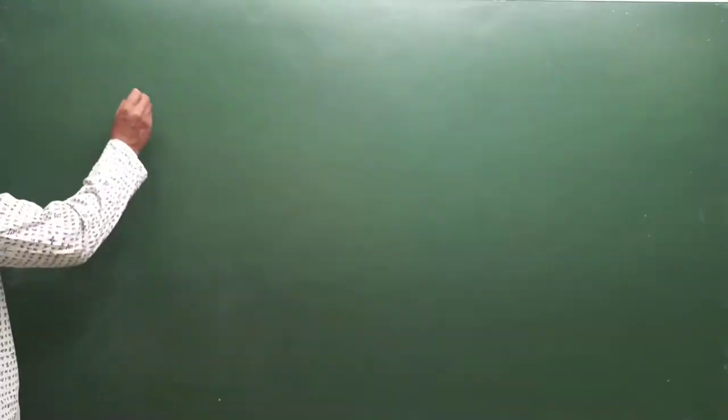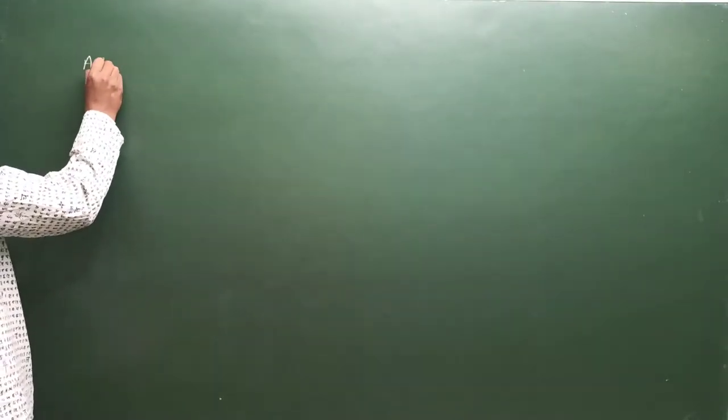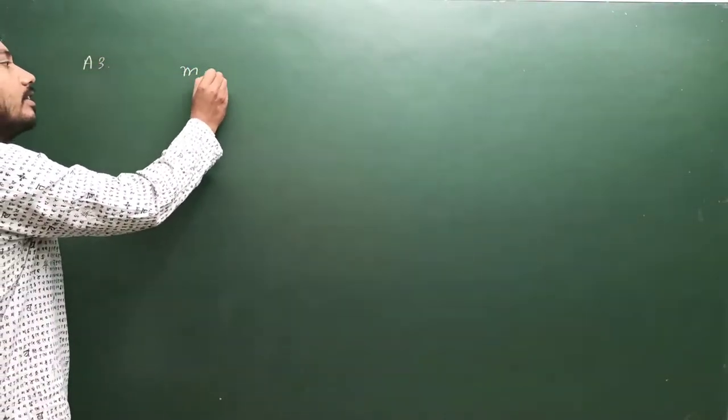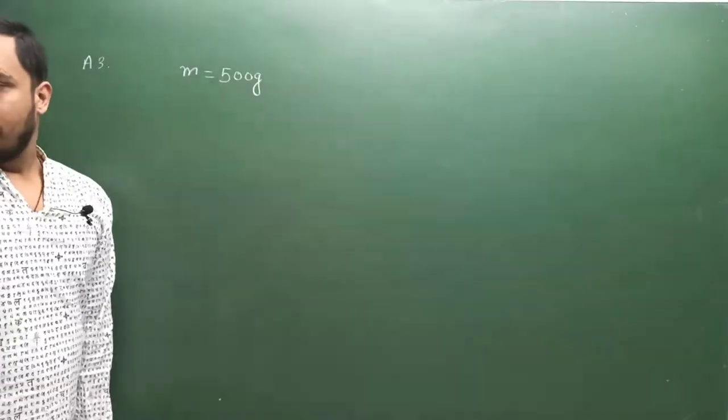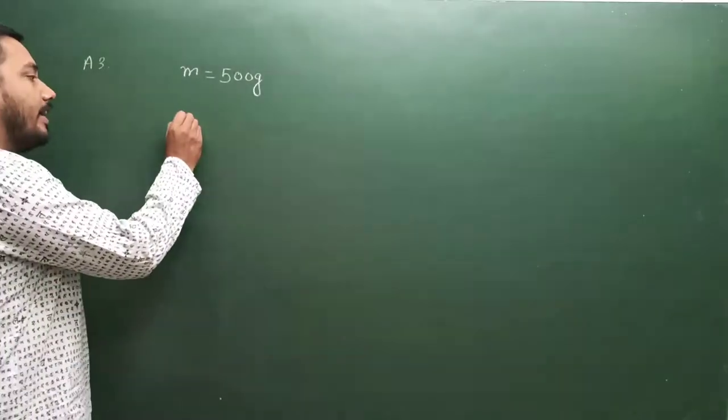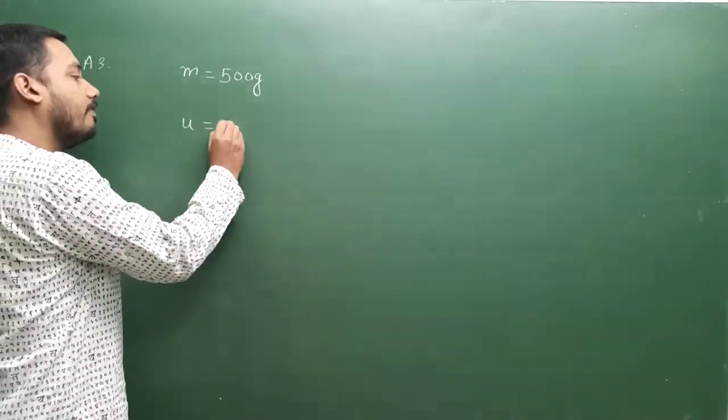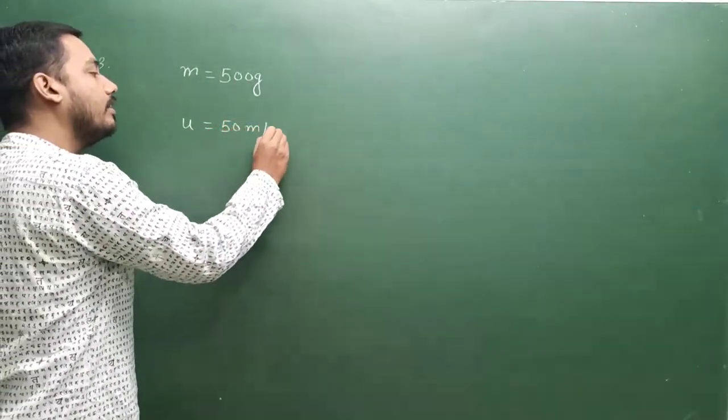what is a hammer of mass of 500 kg, hammer of mass is how much? 500 grams, moving at 50 meter per second. Initial velocity is 50 meter per second.